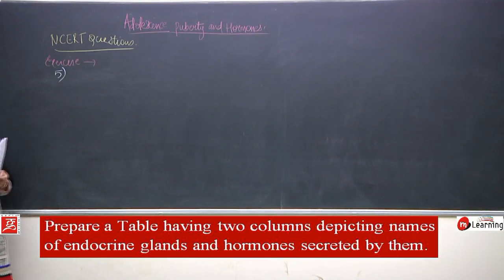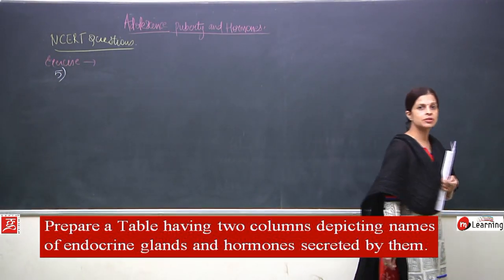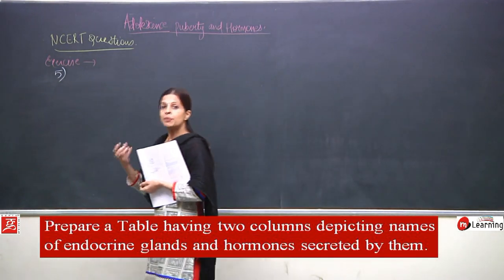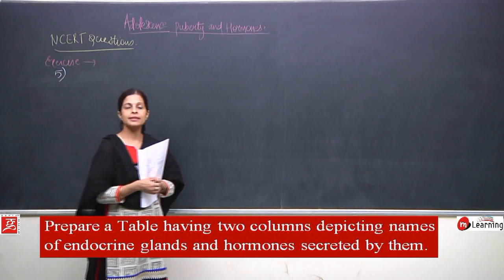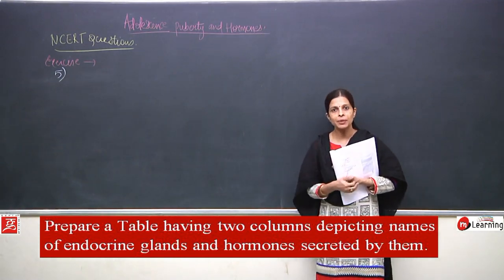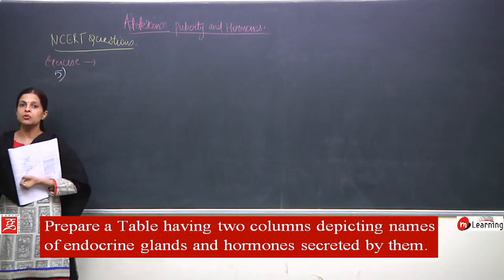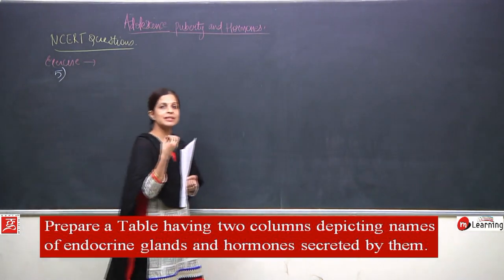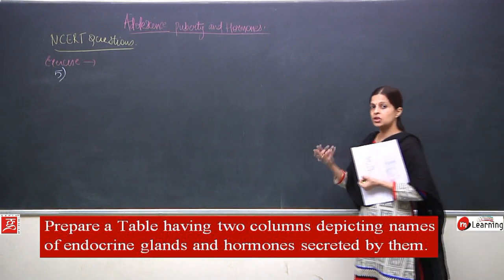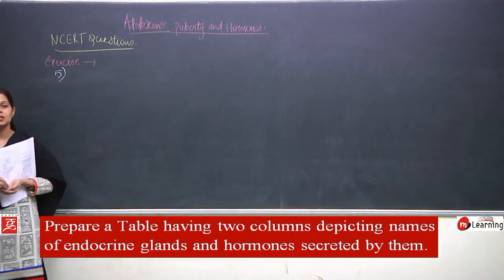We have studied in detail: testes and ovaries. Testes secrete testosterone, which is responsible for the development of secondary sexual characteristics in males and for the production of sperm. Ovaries secrete estrogen, which is responsible for the development of secondary sexual characteristics in females and for the maturation and release of eggs. So these are the two sex hormones - testosterone and estrogen.